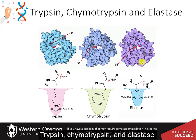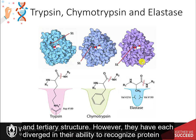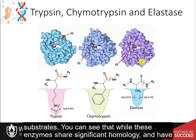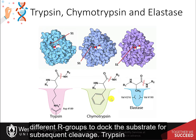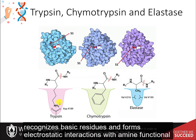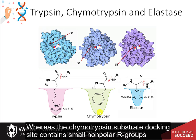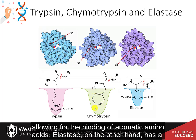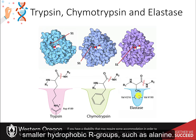Trypsin, chymotrypsin, and elastase, on the other hand, are serine protease homologues that share high-sequence homology and tertiary structure. However, they have each diverged in their ability to recognize protein substrates. You can see that while these enzymes share significant homology and have retained the catalytic triad, the substrate binding domains have evolved to recognize different R-groups to dock the substrate for subsequent cleavage. Trypsin recognizes basic residues and forms electrostatic interactions with amine functional groups, mediated by an aspartic acid residue, whereas the chymotrypsin substrate docking site contains small non-polar R-groups, allowing for the binding of aromatic amino acids. Elastase, on the other hand, has a smaller binding site that contains larger aliphatic residues, limiting the docking site to smaller hydrophobic R-groups, such as alanine.